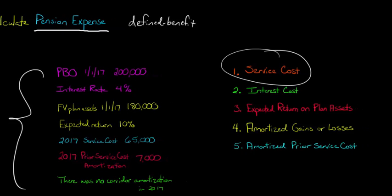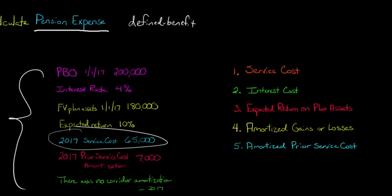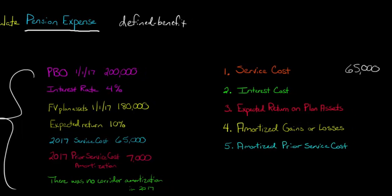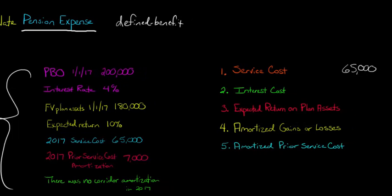Service cost is typically calculated by an actuary and given to the accountants. For 2017, the service cost — which represents the pension benefits earned from that additional year of work from the employees — is $65,000. So we put $65,000 as our service cost.